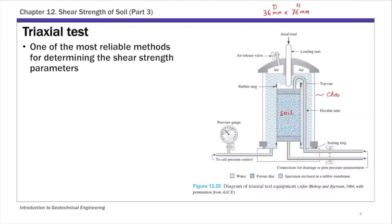This soil specimen is encased by a thin rubber membrane and placed in a testing chamber. The testing chamber is filled with fluid — typically water. The purpose of this fluid is to apply confining stress onto the specimen. The pore pressure of this fluid is controlled in the test, so you can control how much pressure you put on the specimen.